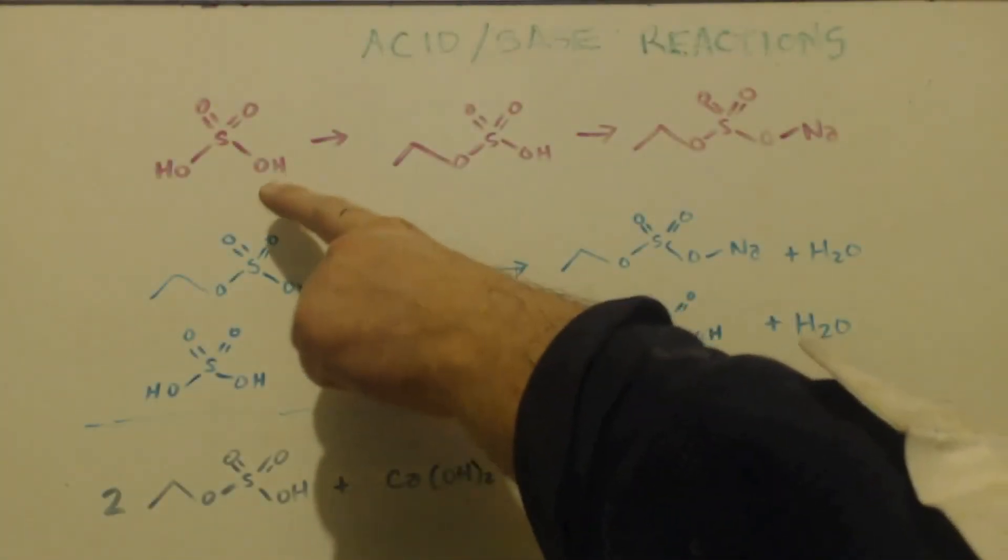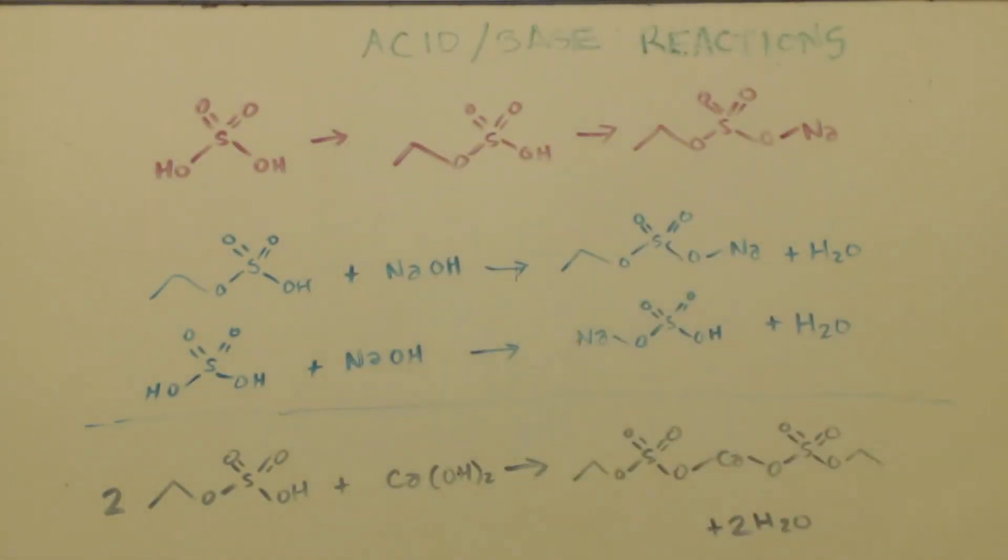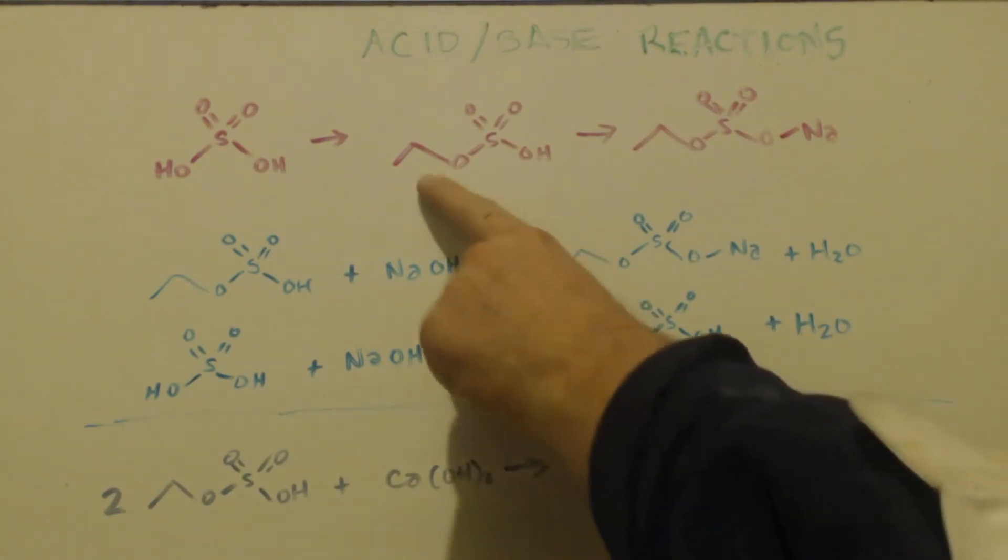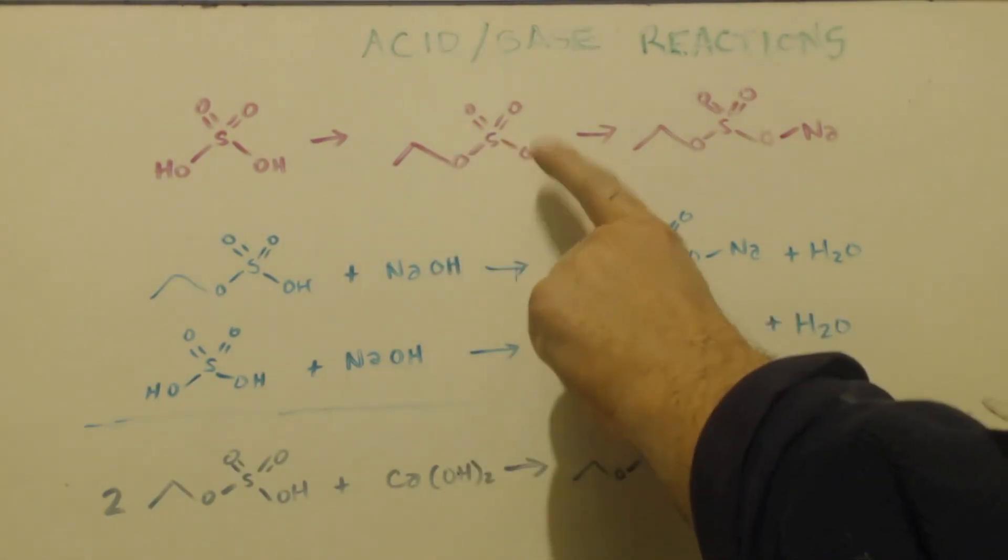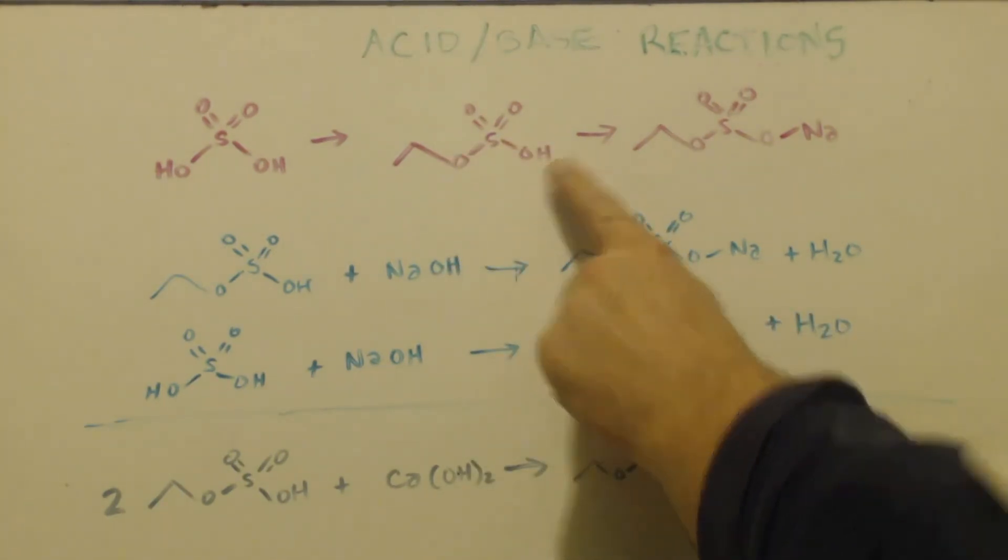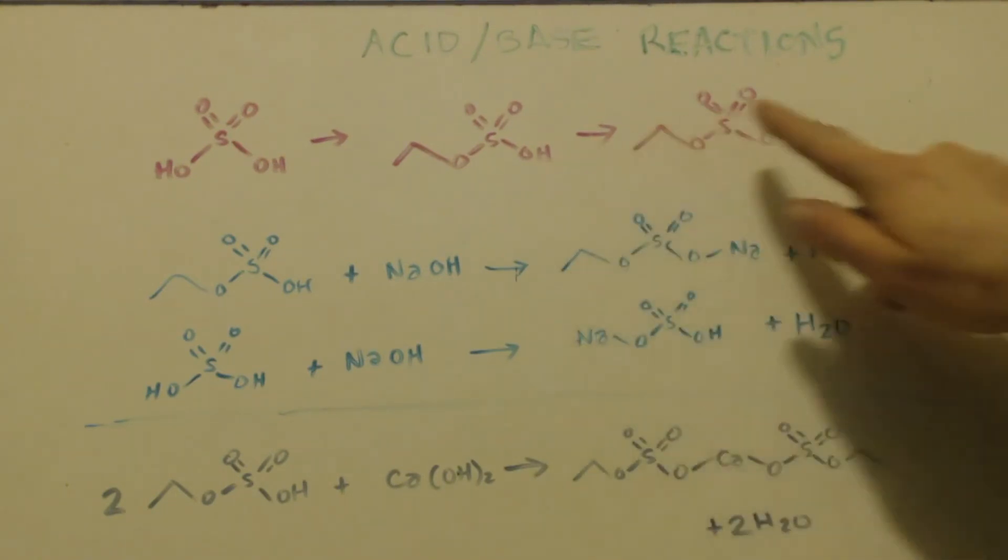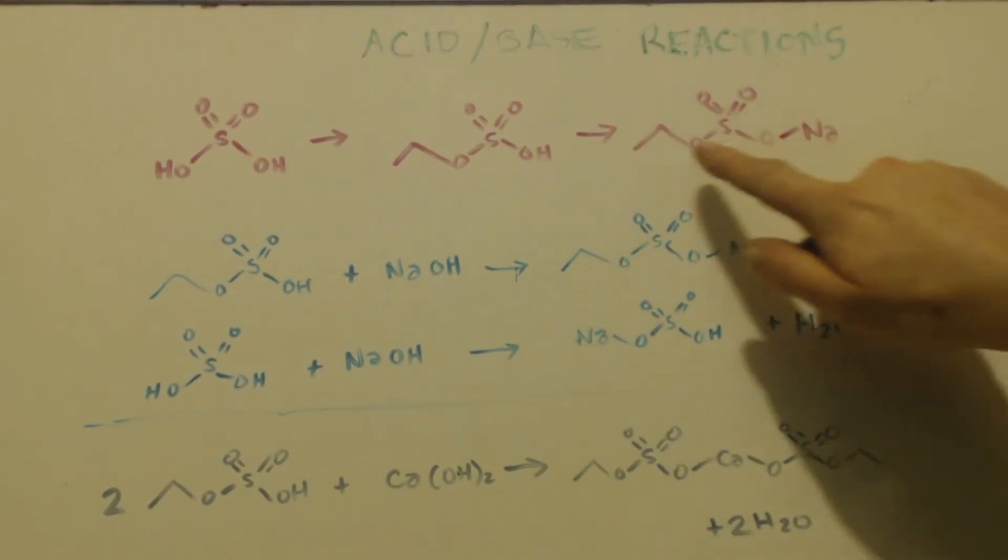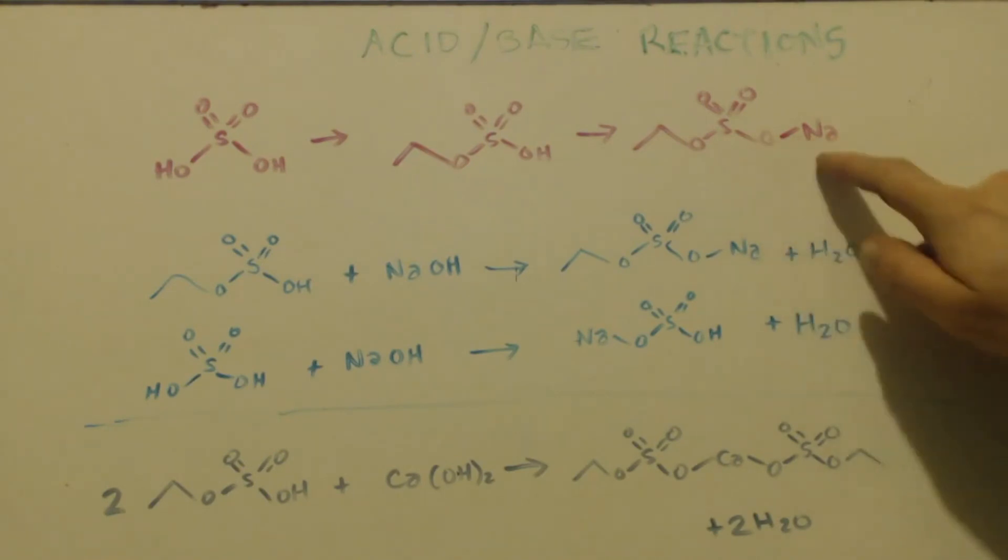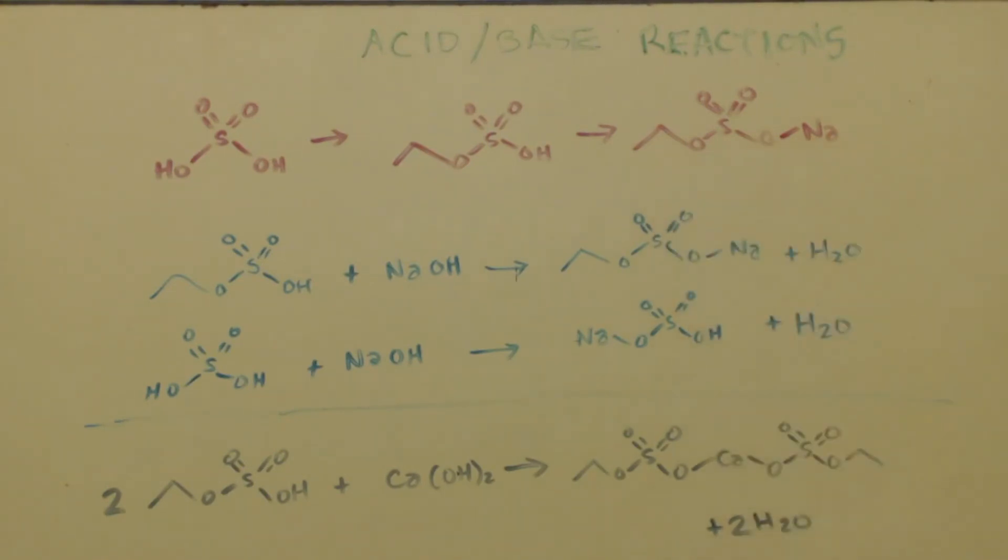All right, so we took our sulfuric acid, we made it into ethyl sulfate, or ethyl bisulfate, which is an ester on this side, but since it's diprotic, it's an acid on this side still. And what we need to do is make this side into a salt, so it's sodium ethyl sulfate. This side's a salt, this side's an ester.